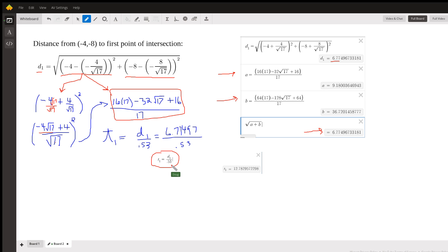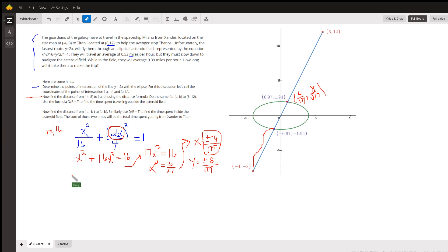Go back to board one. The second part of the trip, you can do the same thing. We have to get this distance, which would be the distance formula.